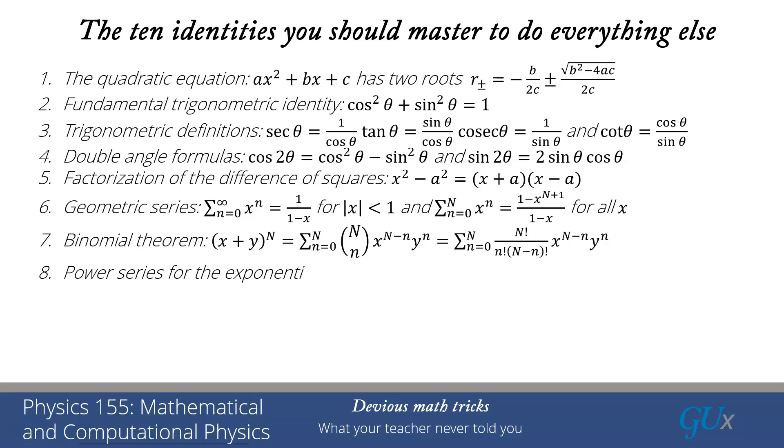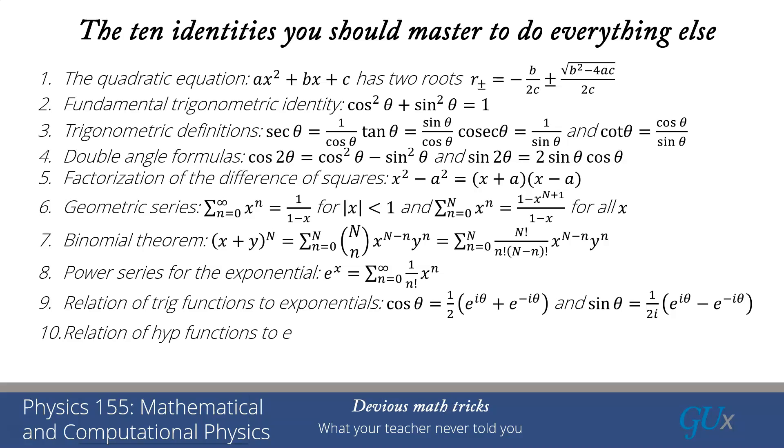The next series that you really need to remember is the power series for the exponential: eˣ = sum n=0 to infinity, (1/n!)xⁿ. And then there are two more that I think are really important to remember. You can derive these from the power series, but it's useful to remember these. The relation of the trig functions to exponentials: cosθ = (1/2)(e^(iθ) + e^(-iθ)), and sinθ = (1/2i)(e^(iθ) - e^(-iθ)). And finally, the same thing for the hyperbolic trig functions: cosh(x) = (1/2)(eˣ + e^(-x)), and sinh(x) = (1/2)(eˣ - e^(-x)). And that's it.